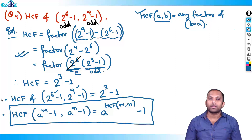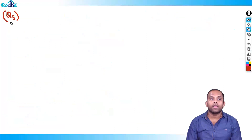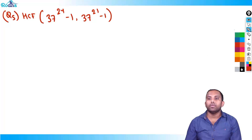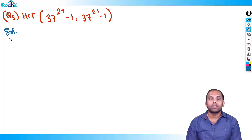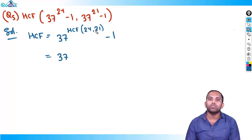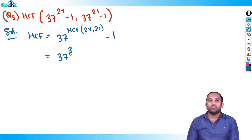This is an important concept. For example, question 5: what is the HCF of 37^24 - 1 and 37^21 - 1? Directly, HCF = 37^(HCF of 24 and 21) - 1 = 37^3 - 1, since HCF of 24 and 21 is 3.